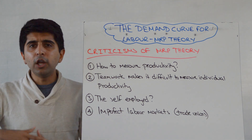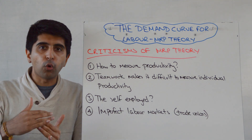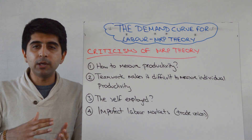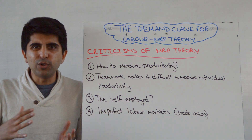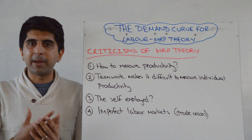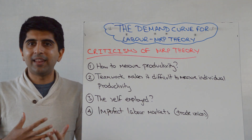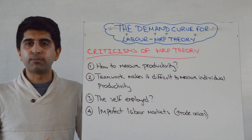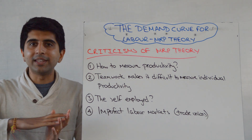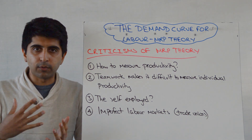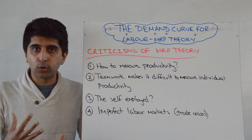The self-employed also pose a problem. We assume that workers are paid according to their MRP, but the self-employed don't use that idea when paying themselves — they don't necessarily pay themselves according to their marginal revenue product. This distorts and goes against the theory we've learned whereby workers are paid according to their marginal revenue product.